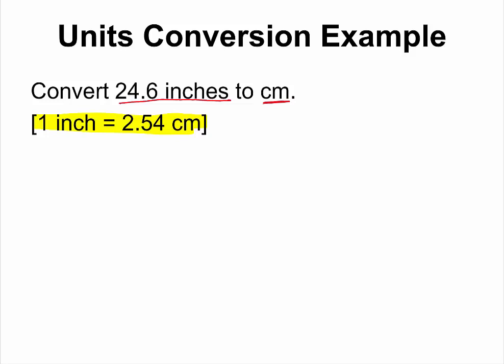This relationship can be written in two ways as conversion factor. You can write it as one inch is equal to 2.54 centimeter, or 2.54 centimeter is equal to one inch. In both cases, we are simply rewriting the relationship. But only one of these two relationships would actually work for this question.